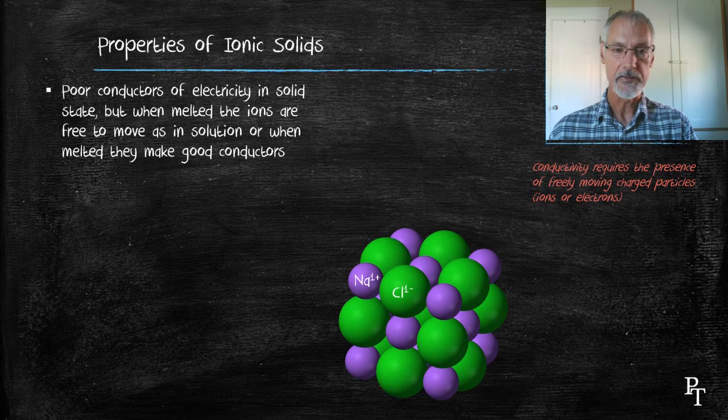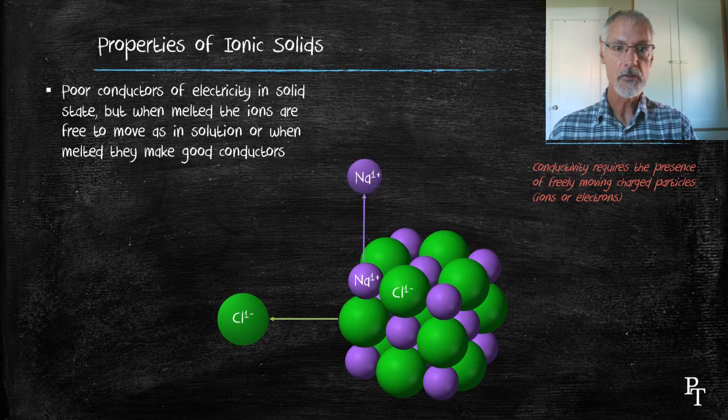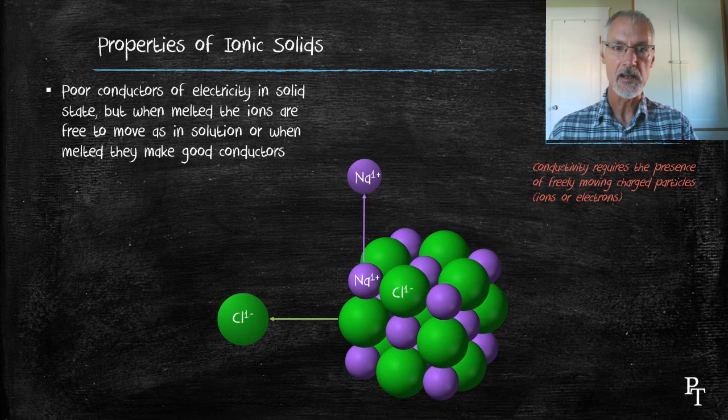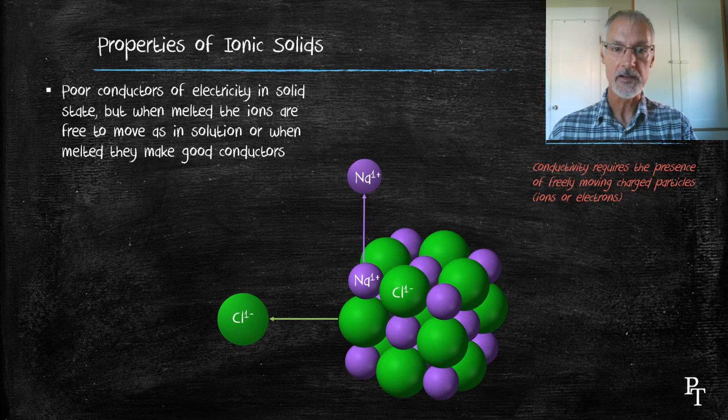However, if I melt the substance or dissolve it, those ions are broken free of the ionic network and allowed to freely roam around, and therefore the substance does become a better conductor.